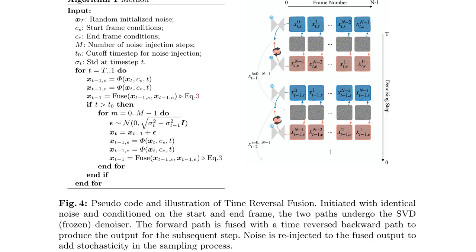For anyone intrigued by the technical details, figure 4 is for you. It describes the TRF algorithm with pseudocode and visuals. It's all about mixing the forward and backward processes intelligently with a noise filter to achieve realistic video clips. This combination — the secret sauce, really — is central to taking any two pictures and connecting them into a continuous video.